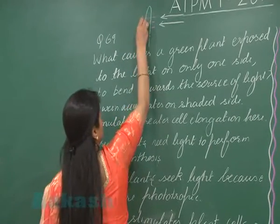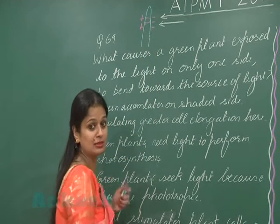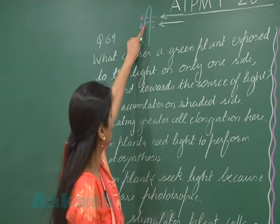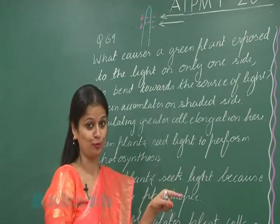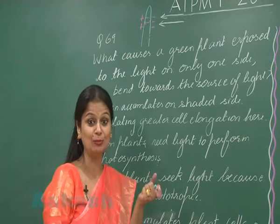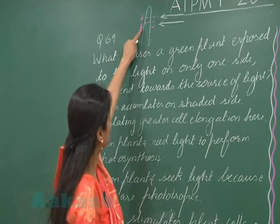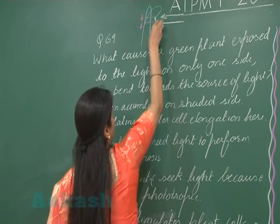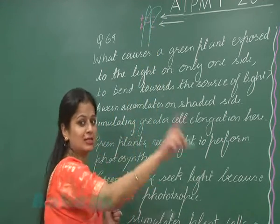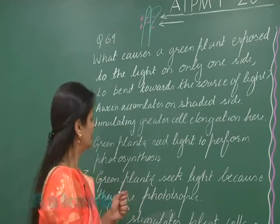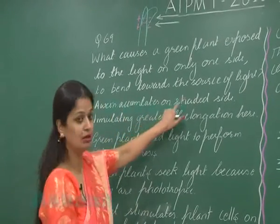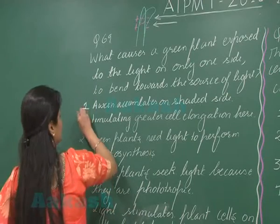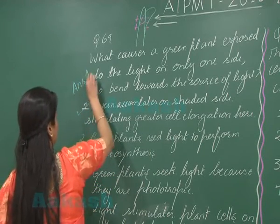On the dark side the auxin concentration will increase. The function of this growth hormone is elongation, so on the dark side elongation will be more. If elongation is more on that side, it will result in curvature of the organ towards the direction of light. So the right option is option number one: auxin accumulates on the shaded side, stimulating greater cell elongation there.